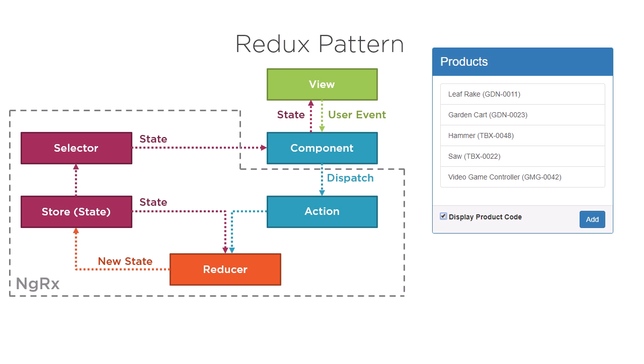With NGRX, for any bit of state that we retain beyond the life of a single component, or provide to other components, we dispatch an action to add that data to our store so we can better manage it. Our components subscribe through a selector to watch for any changes to that stored data. This then defines our one-way data flow.